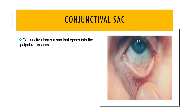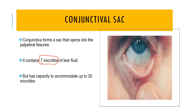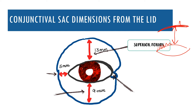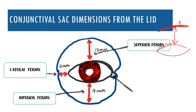The conjunctival sac opens into the palpebral fissure and contains tear fluid. The amount of tear fluid present in the sac is about 7 microlitres, though its capacity can accommodate up to 30 microlitres. The dimensions of the conjunctival sac measured from the eyelid are maximum superiorly — the superior fornix dimension is about 13 mm, the inferior fornix is about 9 mm, the lateral fornix is 5 mm, and the medial fornix is the shallowest.